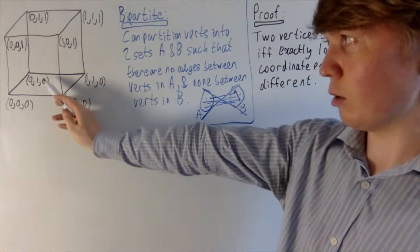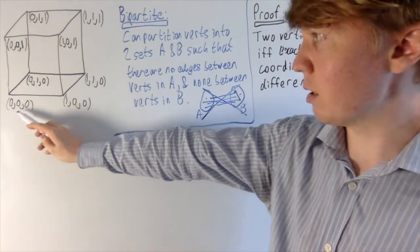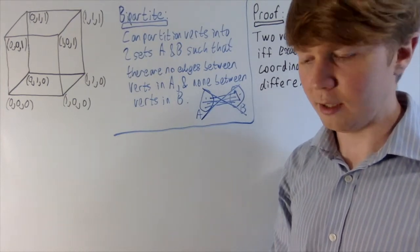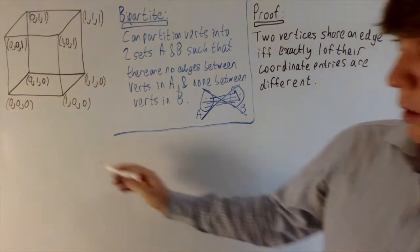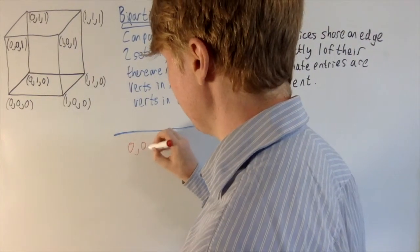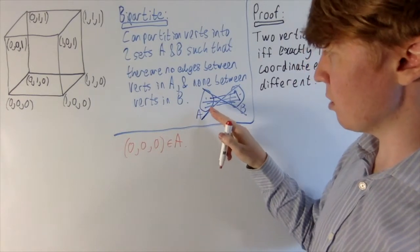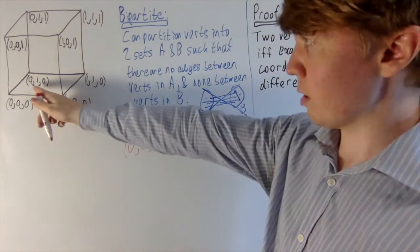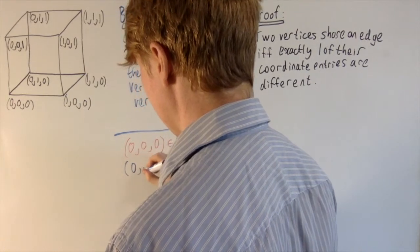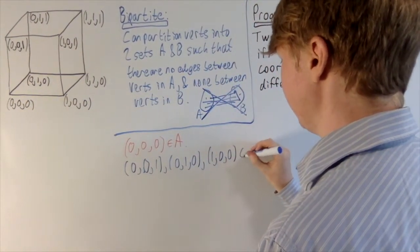For example, (0,0,0) is connected to (0,1,0) — you just go along 1 in the y-direction — but (0,0,0) is not connected to (0,1,1), which is two steps away, so there's no edge connecting those; there's a difference of two coordinate entries. So we can start building our sets A and B for the 3D cube. Without any loss of generality, we'll put (0,0,0) in set A.